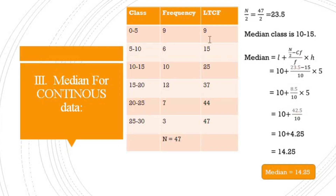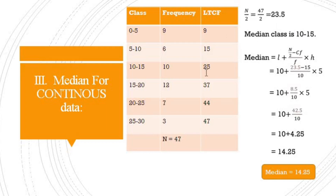First, calculate the less than cumulative frequency: 9, 9+6=15, 15+10=25, 25+12=37, 37+7=44, 44+3=47. Total frequency capital N is equal to 47. Then n/2 = 47/2 = 23.5. The value 23.5 belongs to the class 10–15, so 10–15 is the median class.